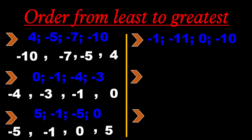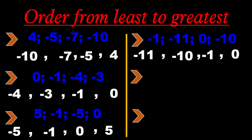Next set: negative 1, negative 11, 0, negative 10. The smallest is negative 11, followed by negative 10, followed by negative 1, and the greatest is 0.